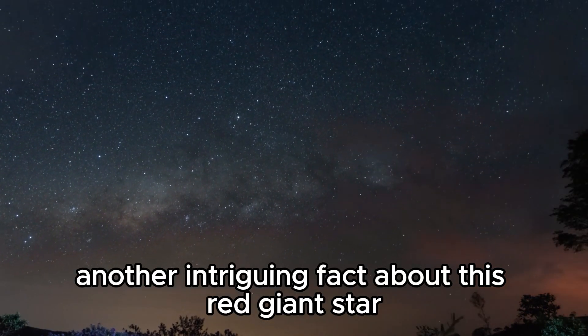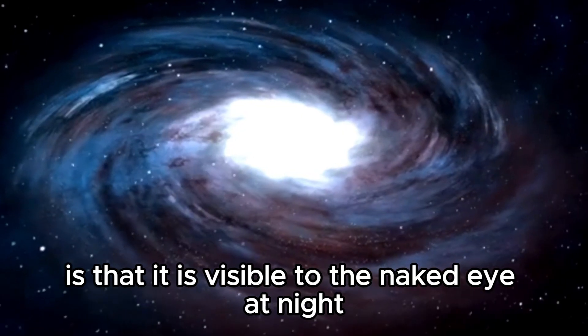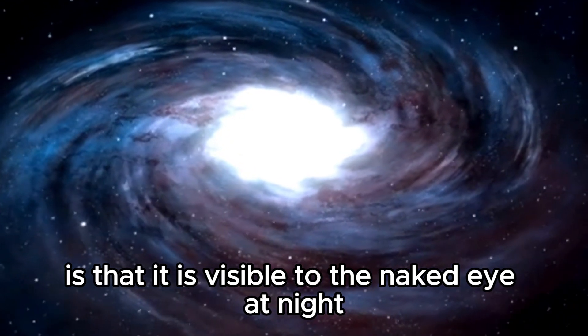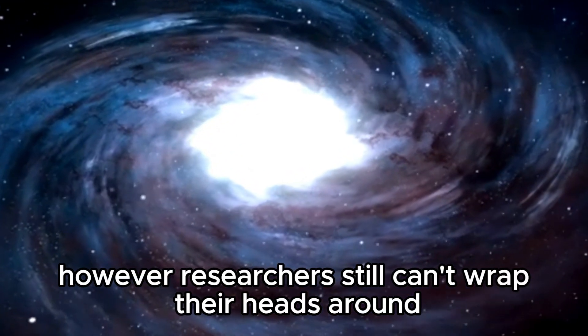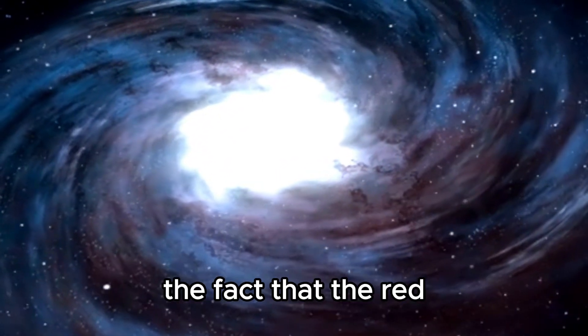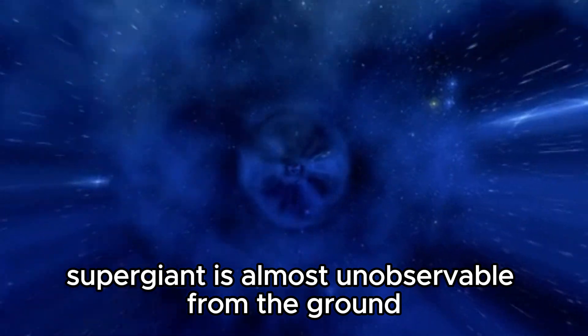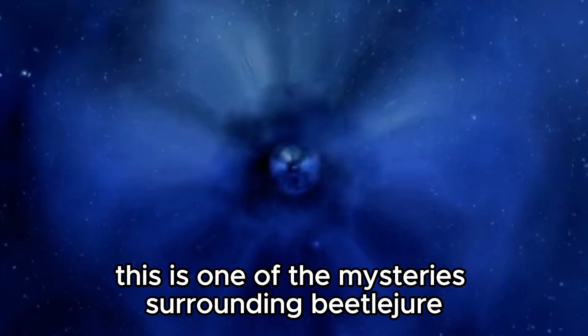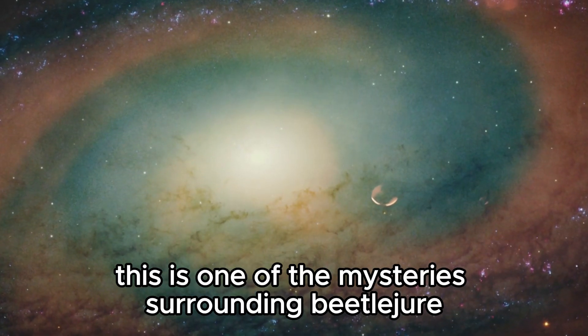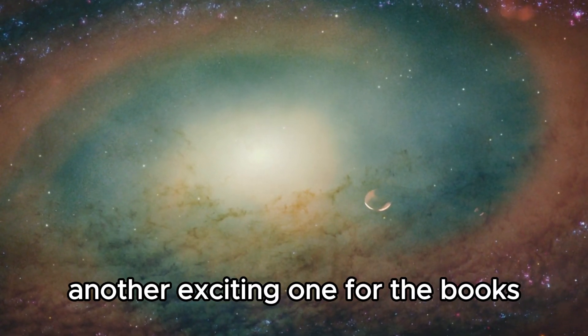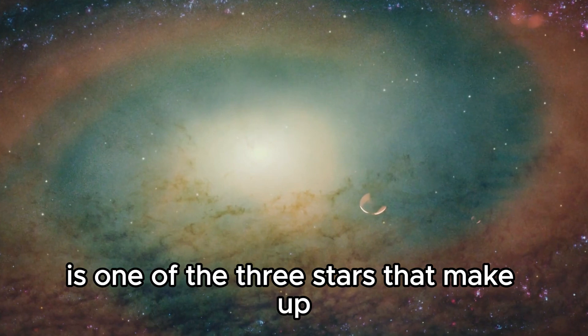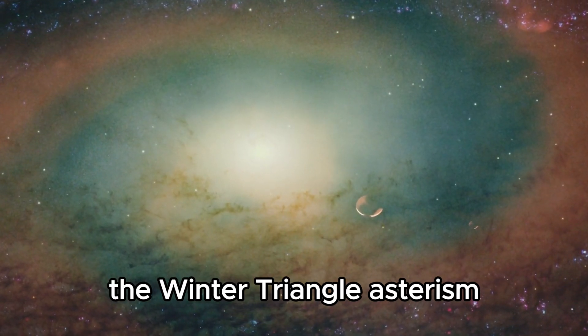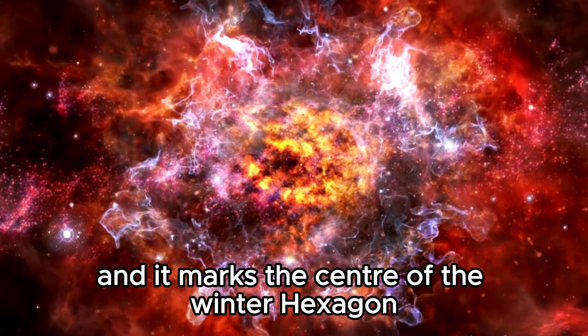Another intriguing fact about this red giant star is that it is visible to the naked eye at night. However, researchers still can't wrap their heads around the fact that the red supergiant is almost unobservable from the ground between May and August because it is close to the sun. This is one of the mysteries surrounding Betelgeuse. Another exciting one for the books is that Betelgeuse is one of the three stars that make up the winter triangle asterism and it marks the center of the winter hexagon.